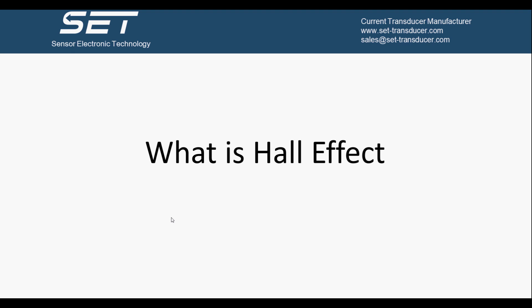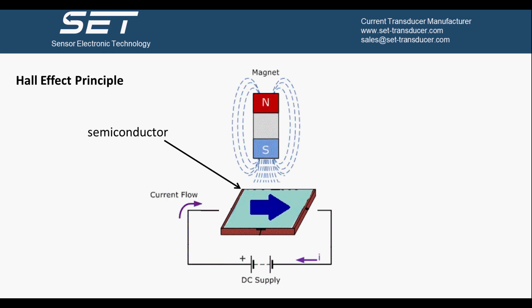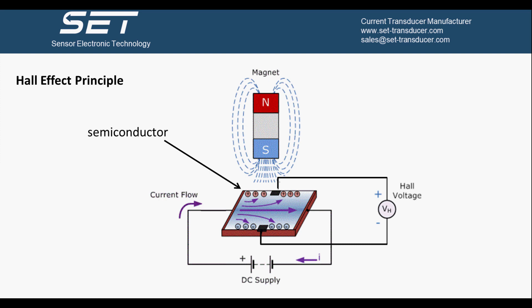The first thing is what Hall Effect is. When a control current flows through a thin flat semiconductor in a magnetic field, the current in the semiconductor is deflected by the action of the magnetic field, so that a voltage difference is formed on both sides of the semiconductor in the vertical direction of the control current. This voltage difference is the Hall Effect, or Hall Voltage. The magnitude of the Hall Voltage is proportional to the strength of the magnetic field and the control current passed through the semiconductor.